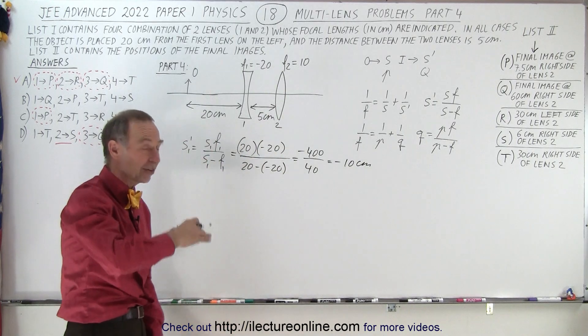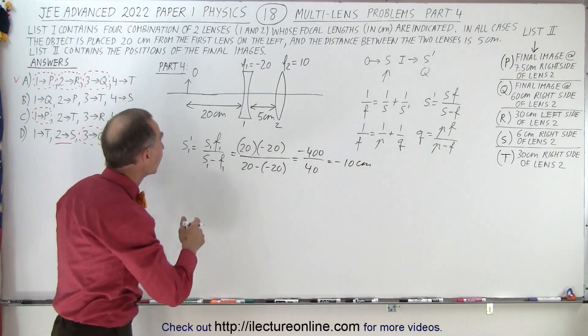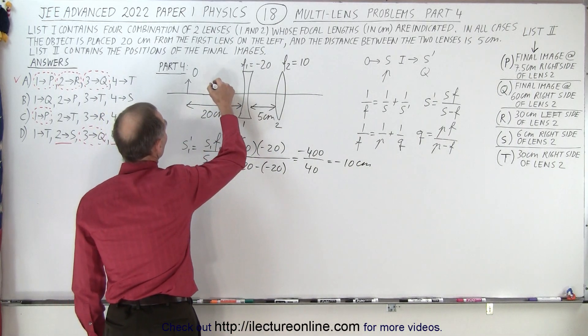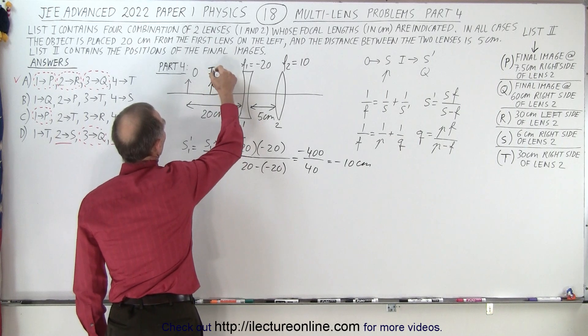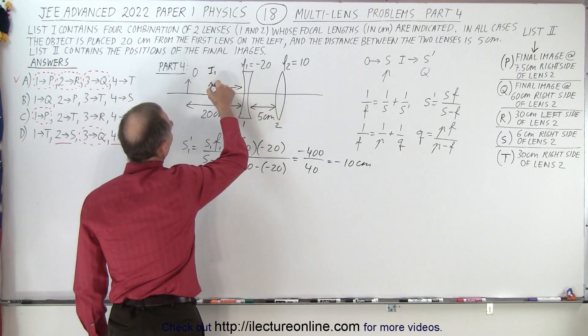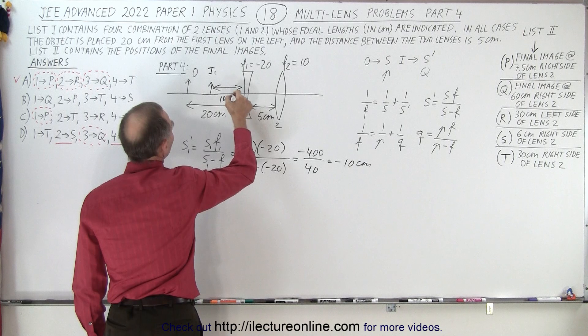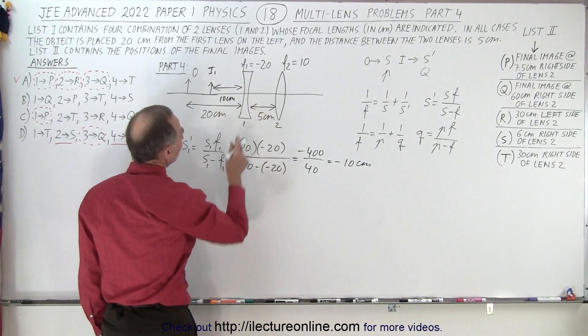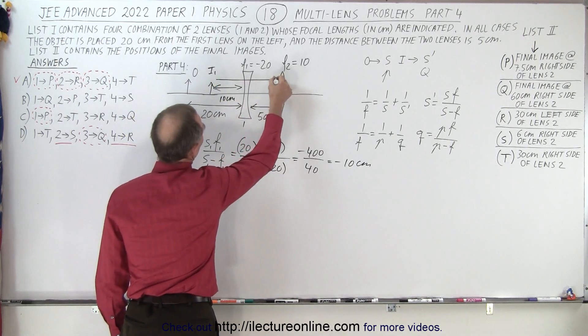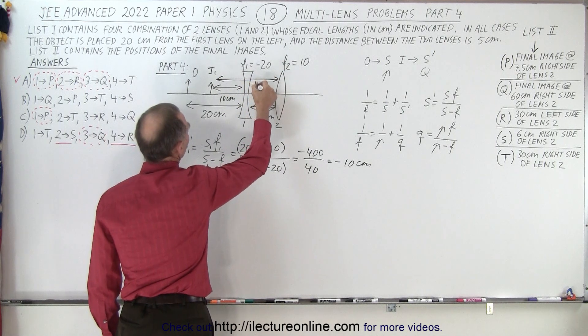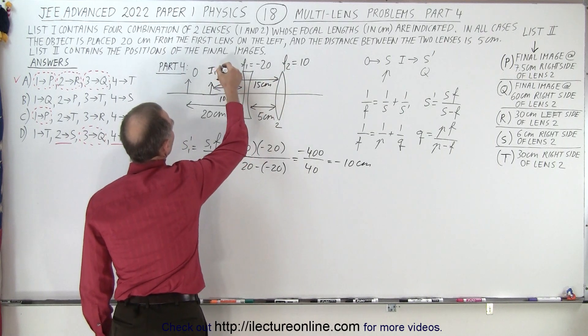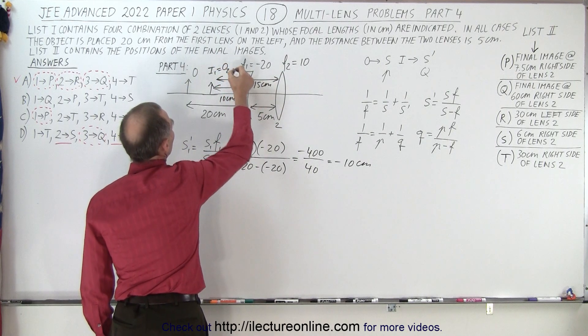Minus means it's in front of lens one by a distance of 10 centimeters. So image one will be here at a distance of 10 centimeters in front of lens one, which means it's 15 centimeters away from lens two. And image one becomes object two.